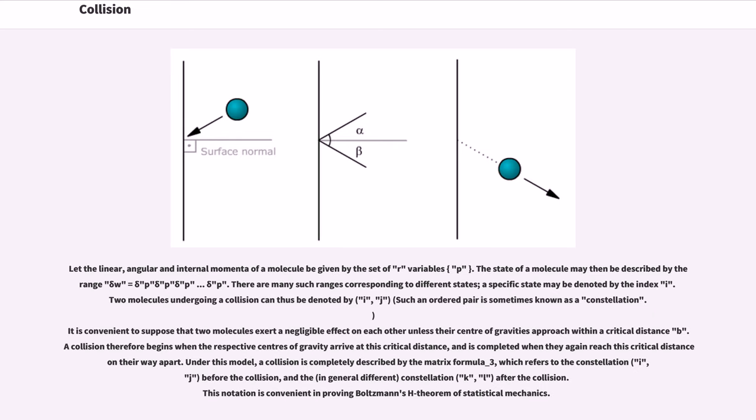Let the linear, angular and internal moment of a molecule be given by the set of our variables. The state of a molecule may then be described by the range Δω = ΔpΔpΔp. There are many such ranges corresponding to different states, a specific state may be denoted by the index i.